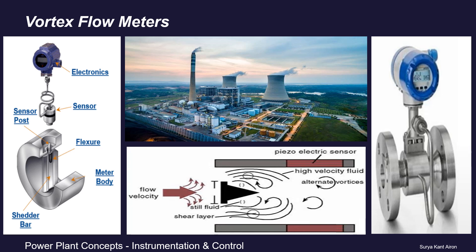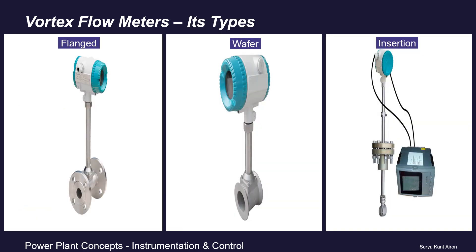In this video we will be discussing our next flow meter, which is based on fluid velocity measurement — based on the principle that fluid flow rate is directly proportional to fluid velocity. It is none other than the vortex flow meter. We will cover its operating principle, how it measures fluid flow rate, its important parts, types, advantages, disadvantages, and where it is used.